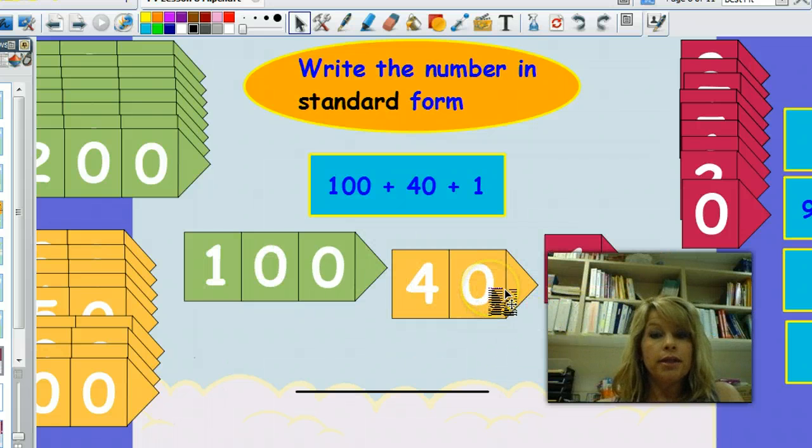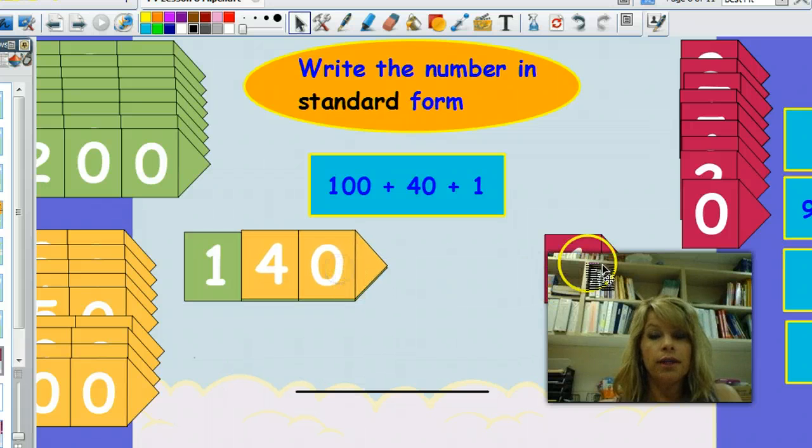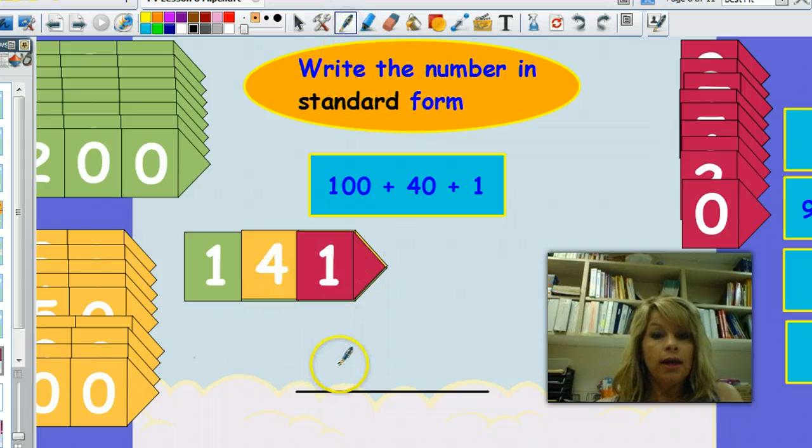If I build that number with these arrow cards, 100 plus 40 plus 1, matching up those arrows carefully, I get the number 141. And I write it in standard form, just like this.